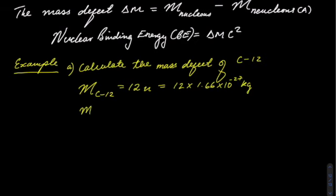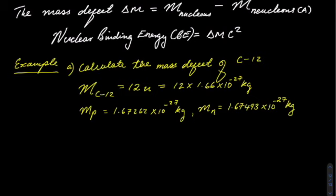The mass of the proton is 1.67262 times 10 to the power minus 27. The mass of one neutron is 1.67493 times 10 to the power minus 27. Slightly heavier than the mass of a proton.